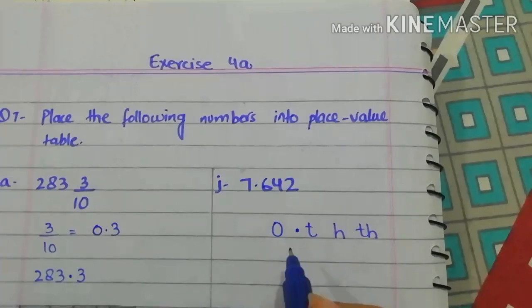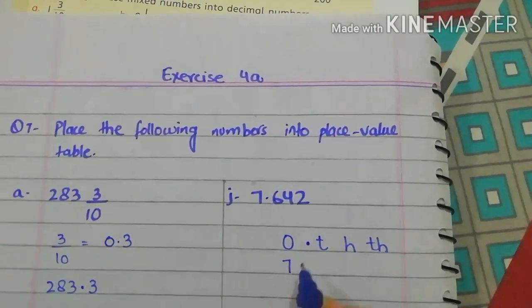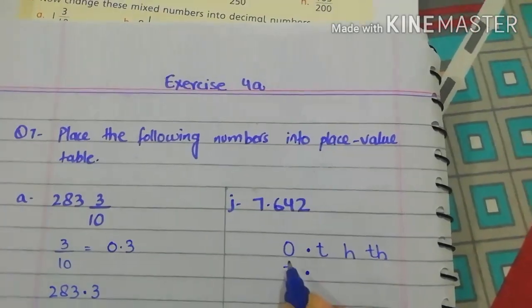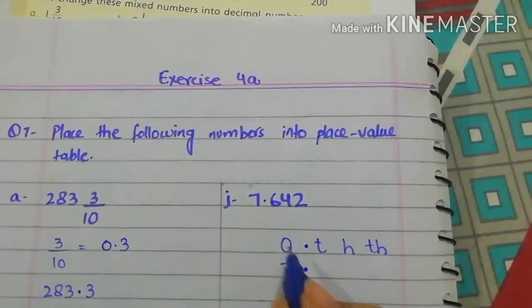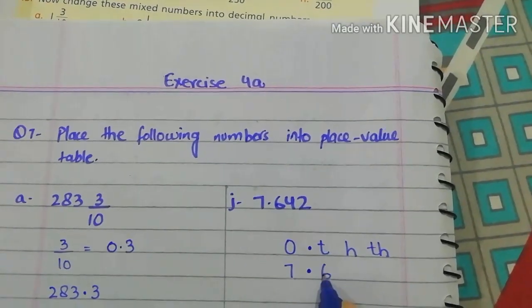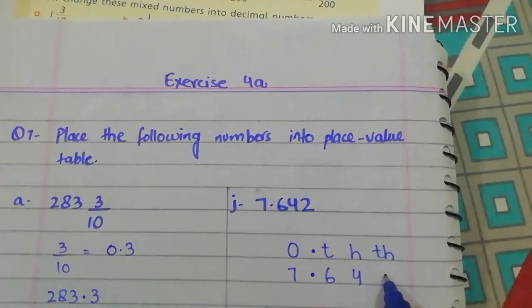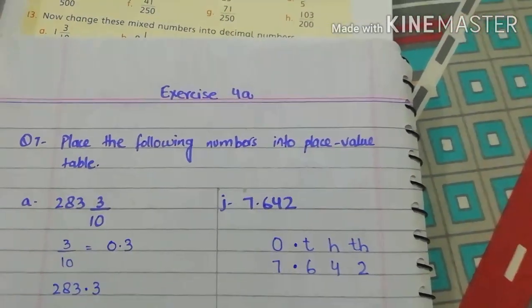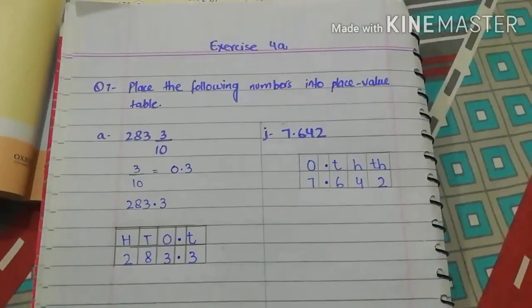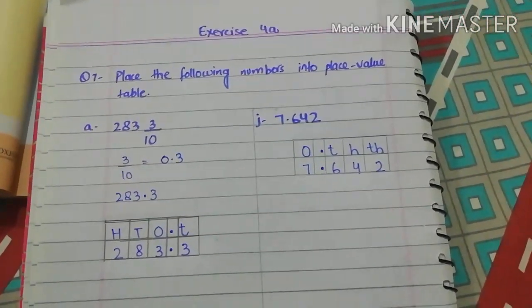Now, place this value. 7 is in 1's place. Put 7 here. Decimal. 6 is in 10's place. 4 is in 100's place. And 2 is in 1000's place. Dear students, now you will do the remaining parts of question number 7 by yourself.